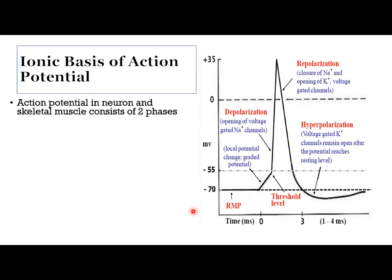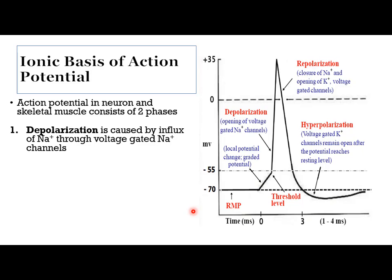In short, what is the ionic basis of the action potential? Depolarization is caused by sodium influx and has two stages: a slow stage until we reach the threshold level, and at threshold, most voltage-activated sodium channels open and rapid depolarization occurs with an overshoot to positive 35 millivolts.